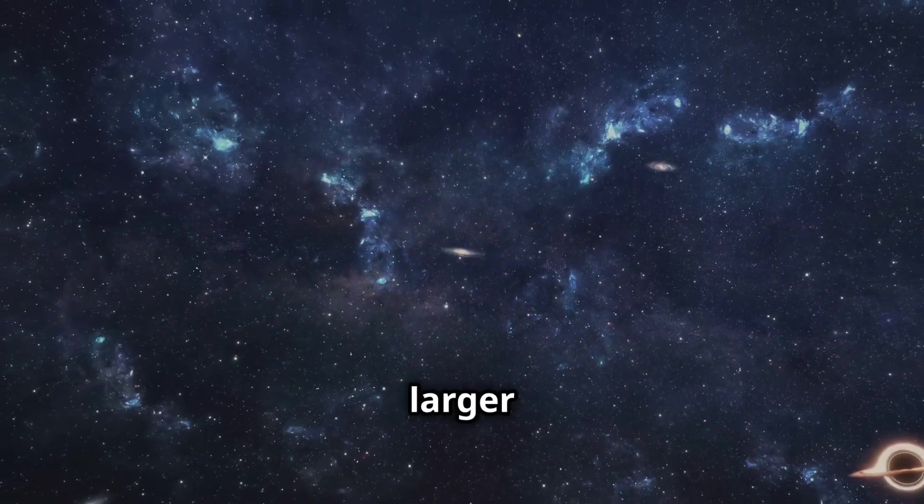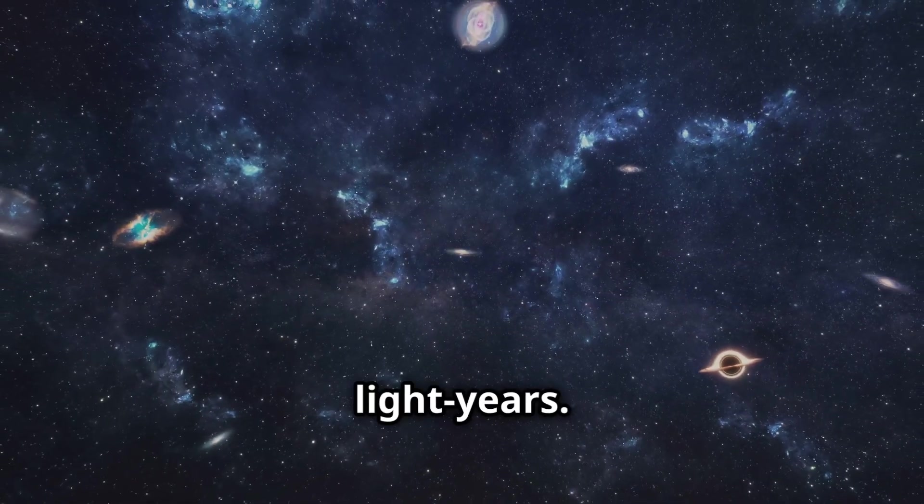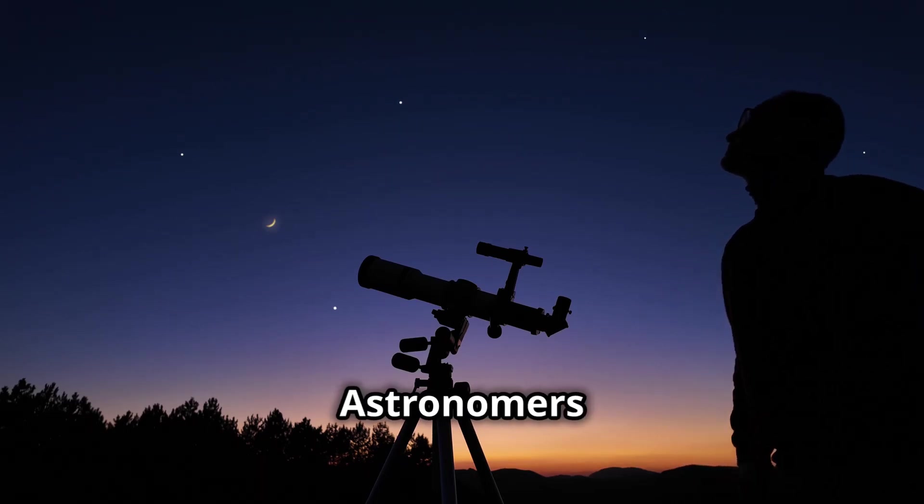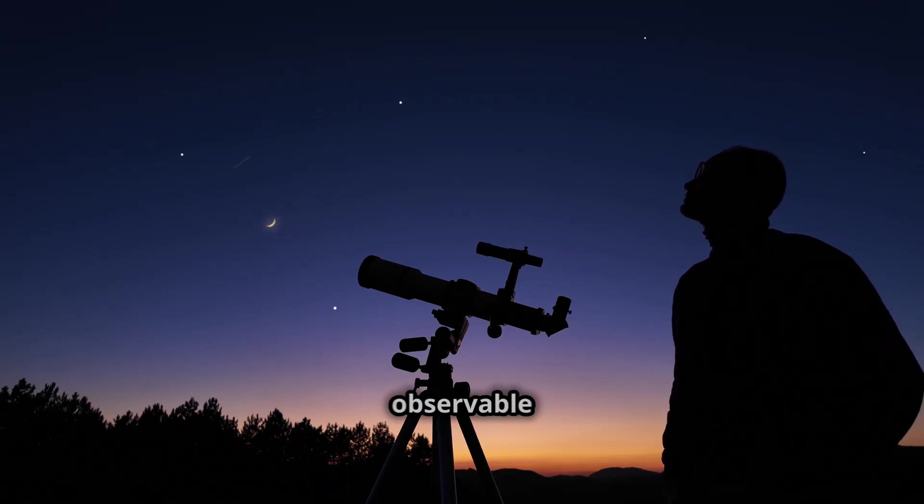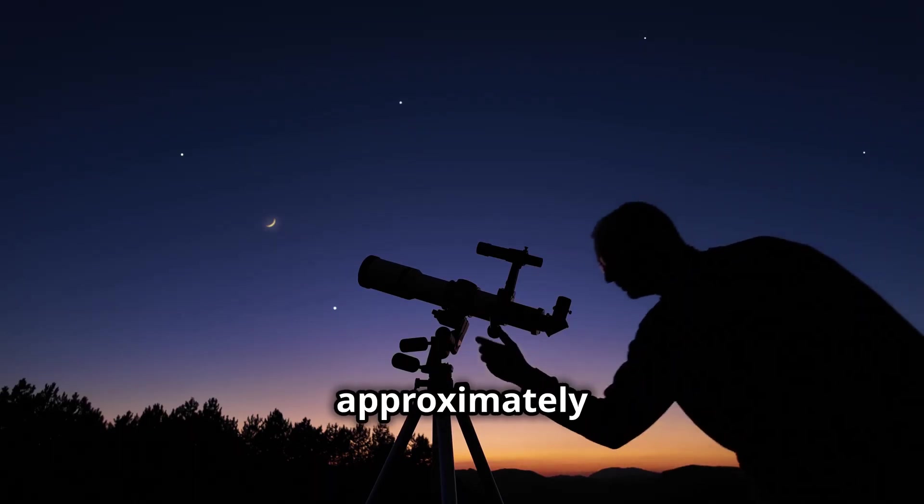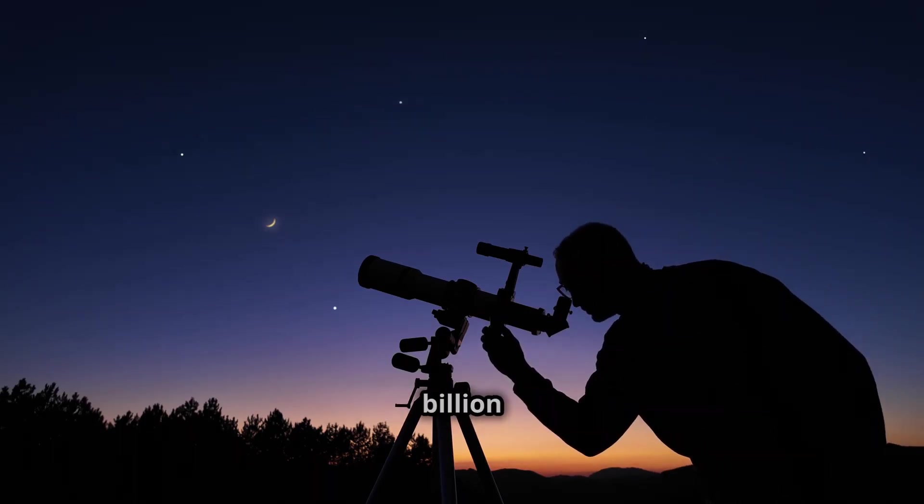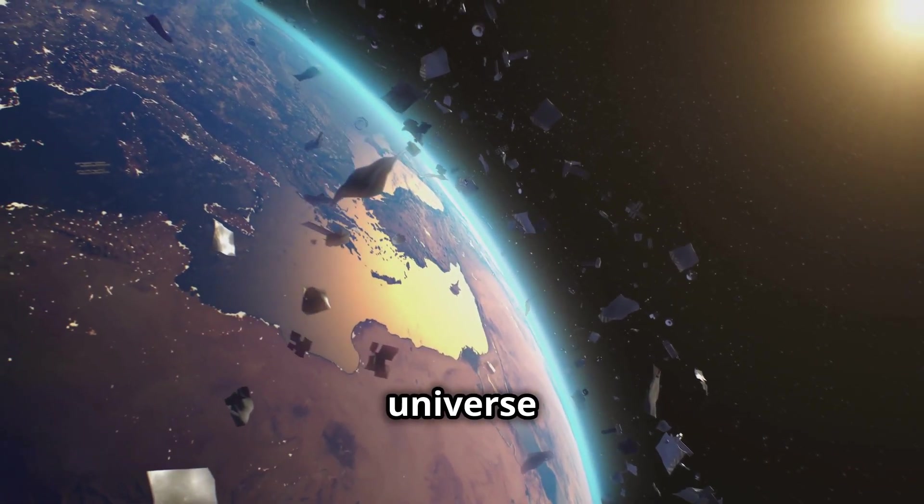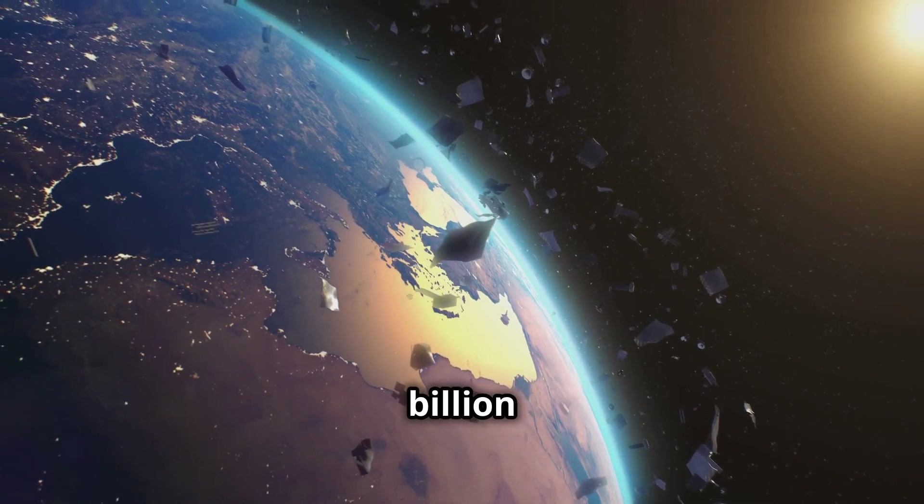The observable universe is larger than 13.8 billion light years. Astronomers have calculated that the current radius of the observable universe is approximately 46.5 billion light years. That means the diameter of the observable universe is a staggering 93 billion light years.